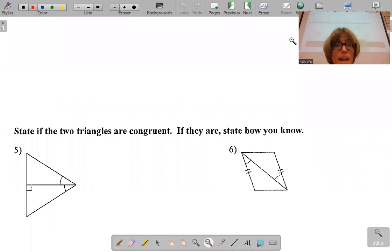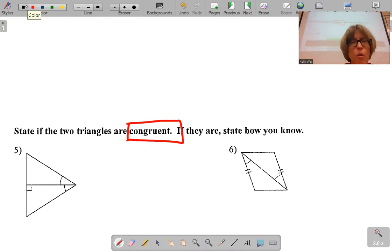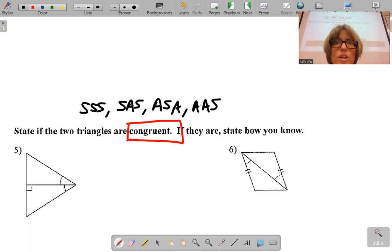So when it says triangles are congruent, you are looking for one of these four: side, side, side; side, angle, side; angle, side, angle; or angle, angle, side. And the number one thing you have to watch out for here are freebies.